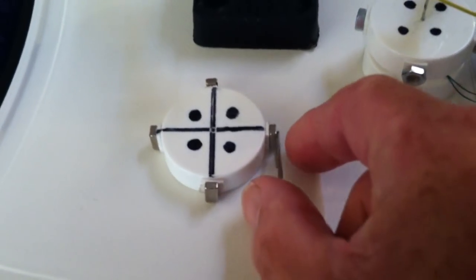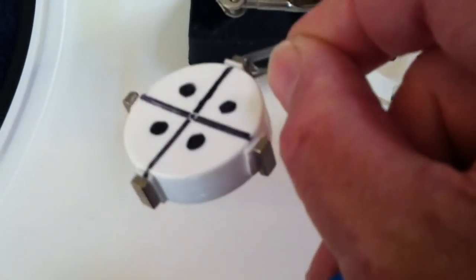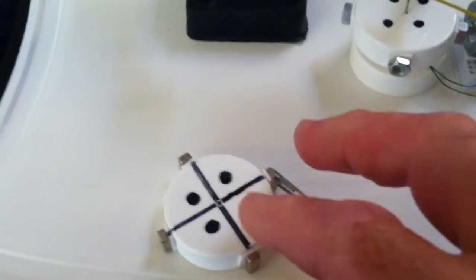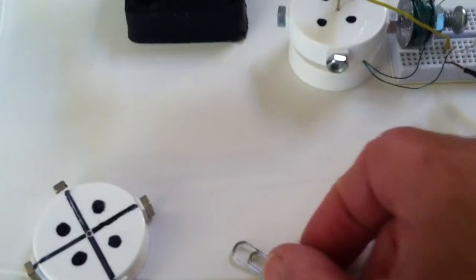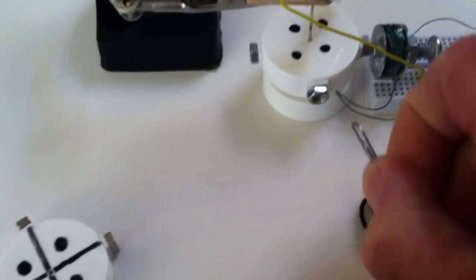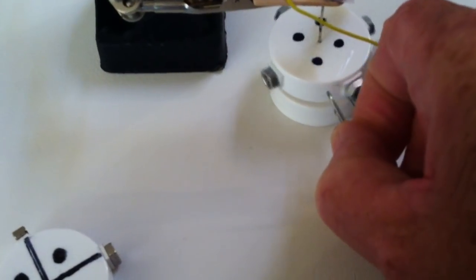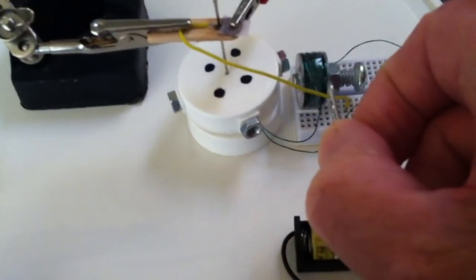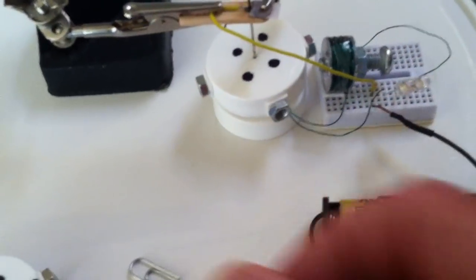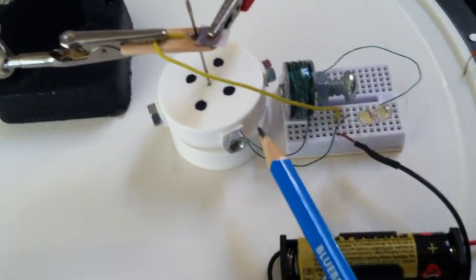This is the original rotor that used magnets. This motor here is just using steel nuts that are not magnetic at all. They don't have any attraction, but the electromagnet pulls on these nuts